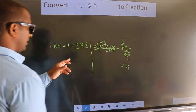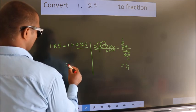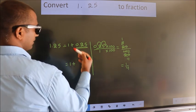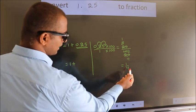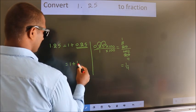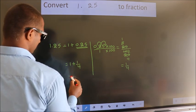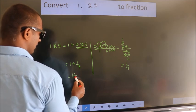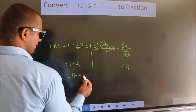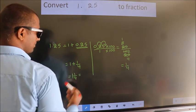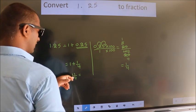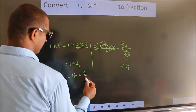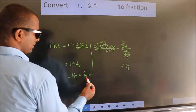Now, 1 plus 0.25 becomes 1 plus 1 by 4. In mixed fraction form that is 1 and 1 by 4. And in improper fraction: 1 into 4 is 4, plus 1 gives 5, so 5 by 4 is our fraction.